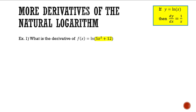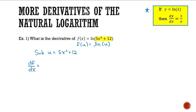We're going to substitute u = 5x² + 12 into this expression, giving us f(u) = ln(u). Now I have my expression in the form y = ln(u). To get df/dx — since we want the derivative in terms of x — we apply the chain rule: df/dx = (∂f/∂u) · (du/dx).